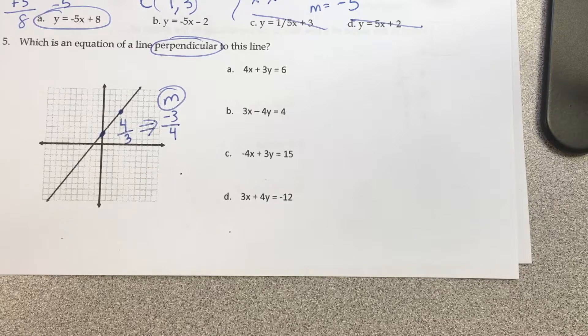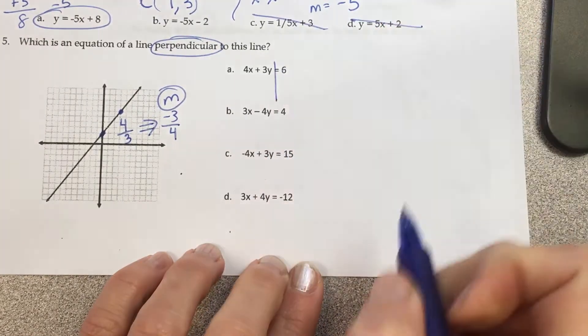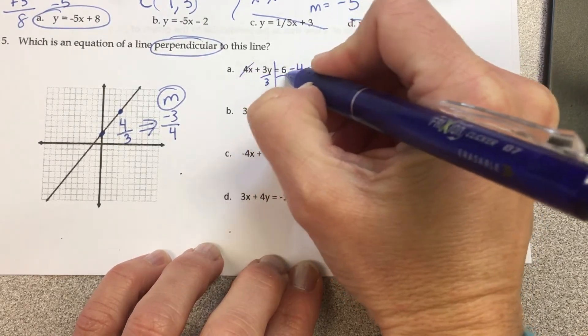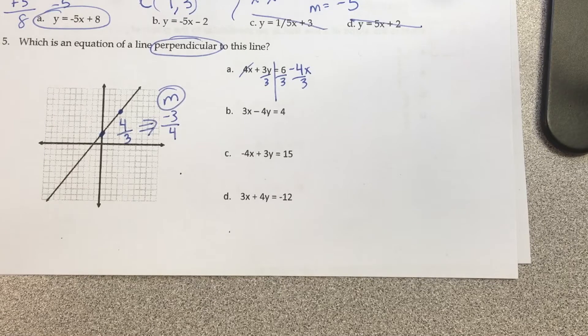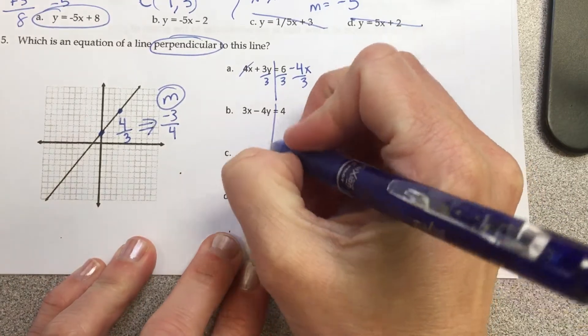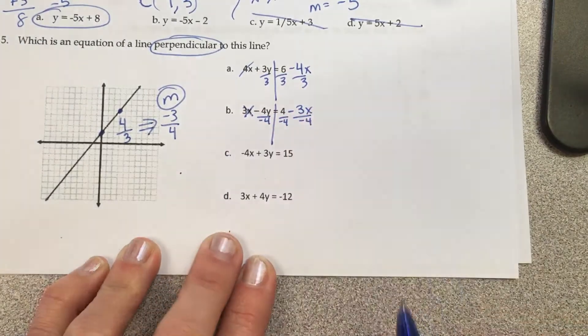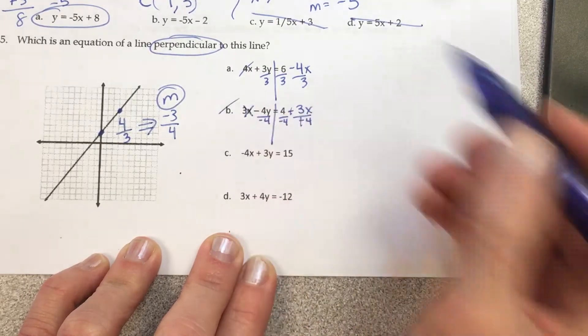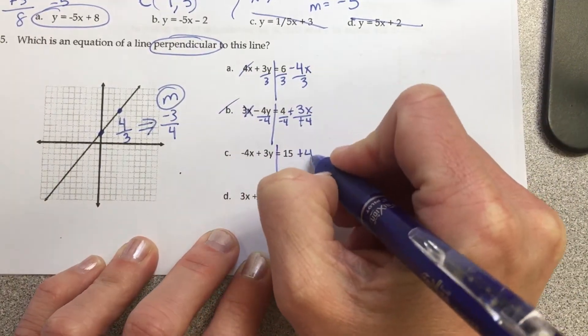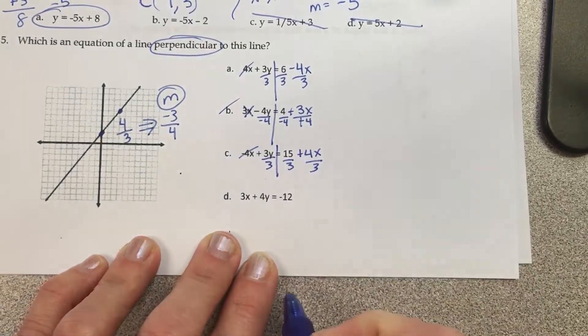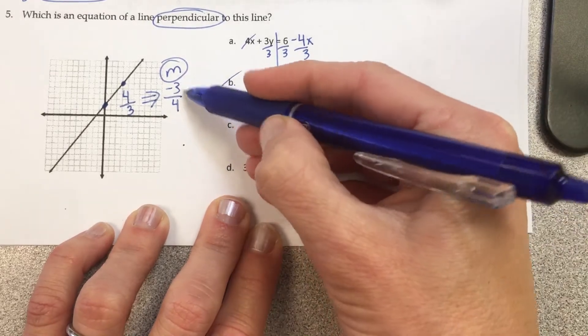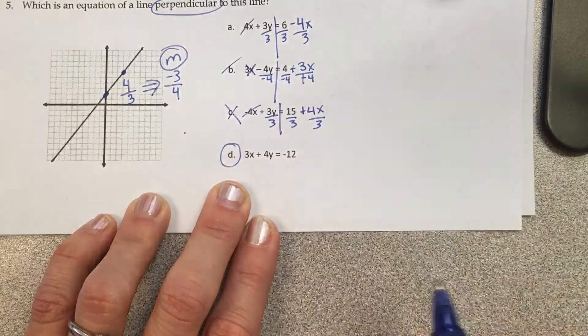Which answer choice has a slope of negative 3 over 4? We don't know, we have to solve them. So subtract 4x, divide by 3. The only thing I care about is the slope, don't do more work than you have to. What is the slope of this line? Negative 4 over 3. What do I want it to be? Negative 3 over 4. So that doesn't work. For this one, I minus 3x, divide by negative 4 - a negative by a negative turns positive, so B doesn't work. C, I add 4x, divide by 3 - that gives me a slope of 4/3. I'm looking for negative 3 over 4, so the answer must be D.